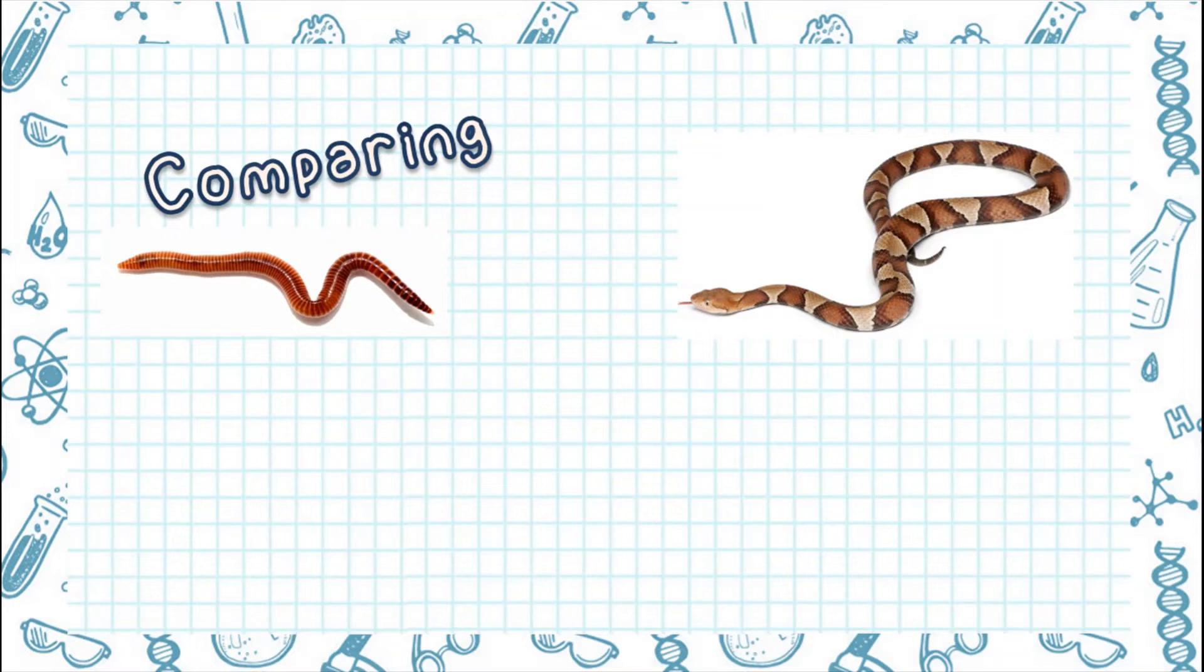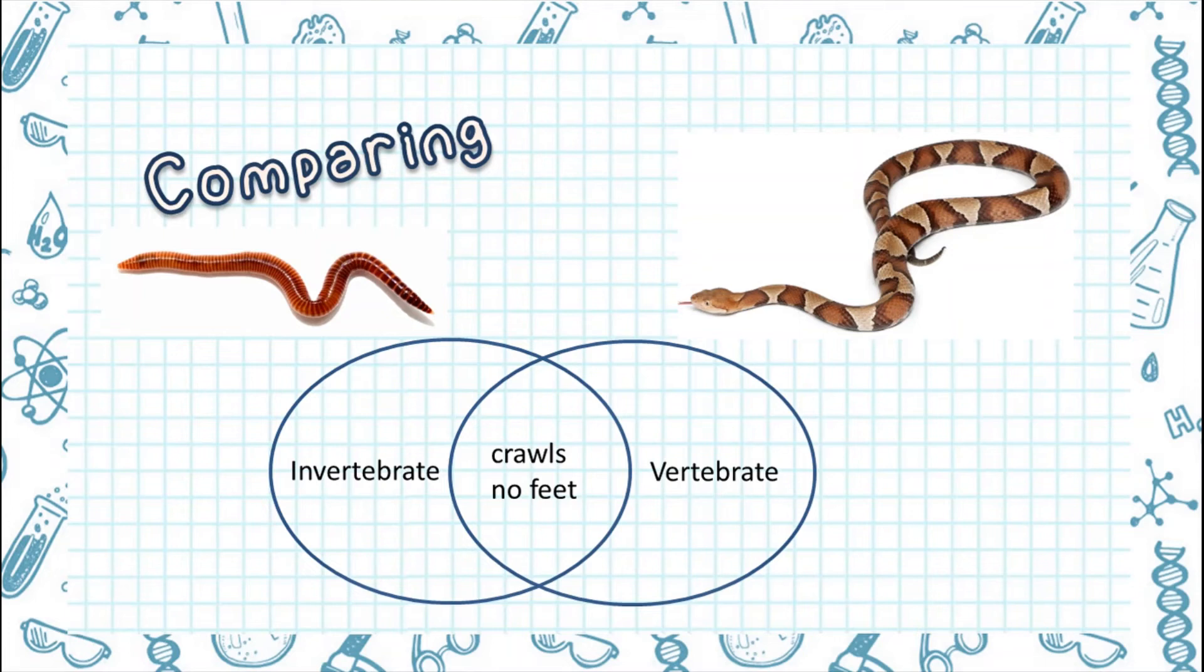Look at these two pictures. How are you going to compare a worm and a snake? In this part, we can use a Venn diagram. A worm and a snake is similar in terms that they both crawl and they don't have feet. They are different because a worm is classified as an invertebrate while a snake is classified as a vertebrate.